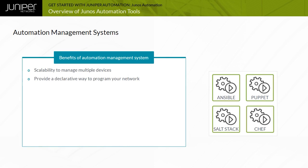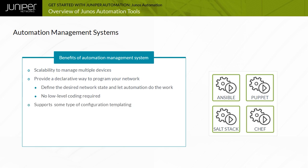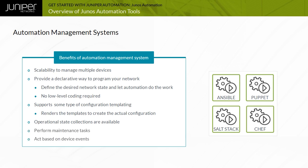Automation management systems enable you to take a declarative approach to configuring your network. You define the desired final state of the system, and the automation management system performs the low-level configuration. Most automated management systems support some type of configuration templating. The system renders the templates to create the actual configuration uploaded to managed devices. Operations like software upgrades, file uploads, and file downloads are also typically available. Platforms such as Salt enable you to react to events and take actions based on the event type and severity.